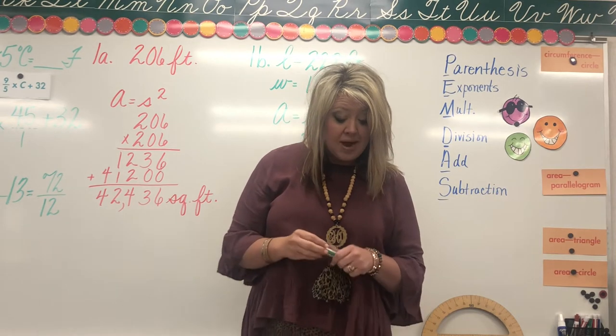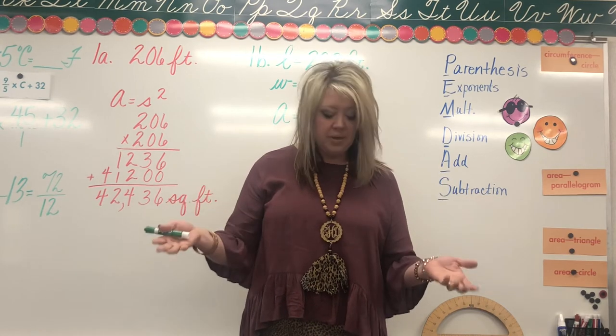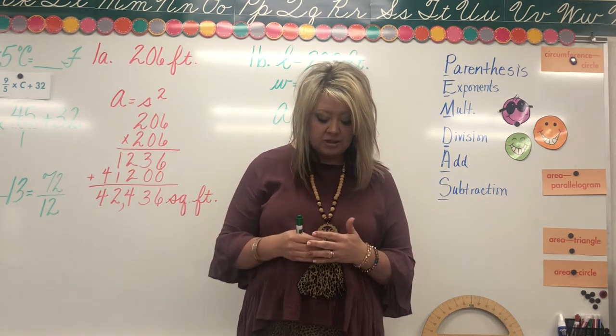Section number three is the perimeter of a rectangle. You don't have to do any converting. It's just P equals two times L plus two times W for section three.